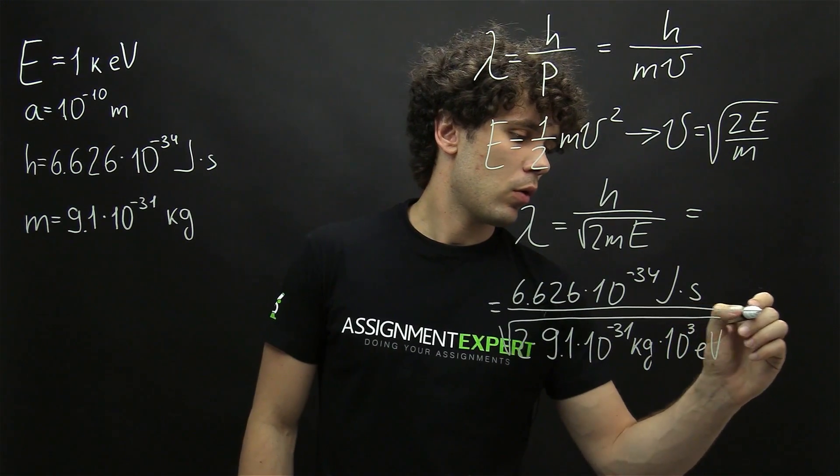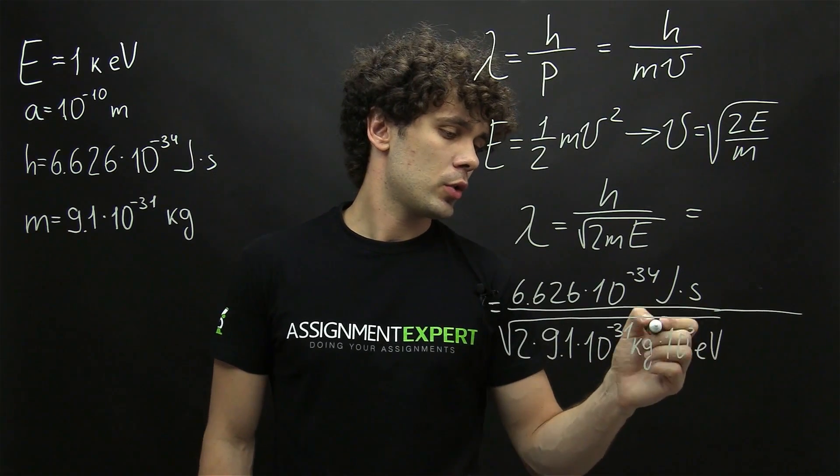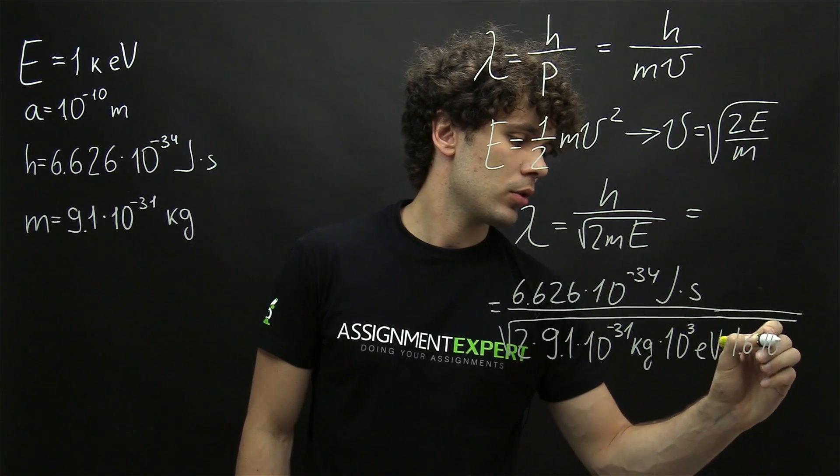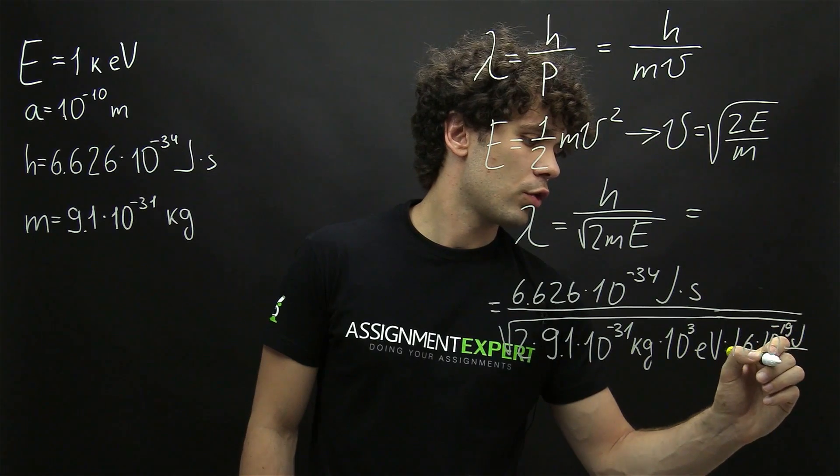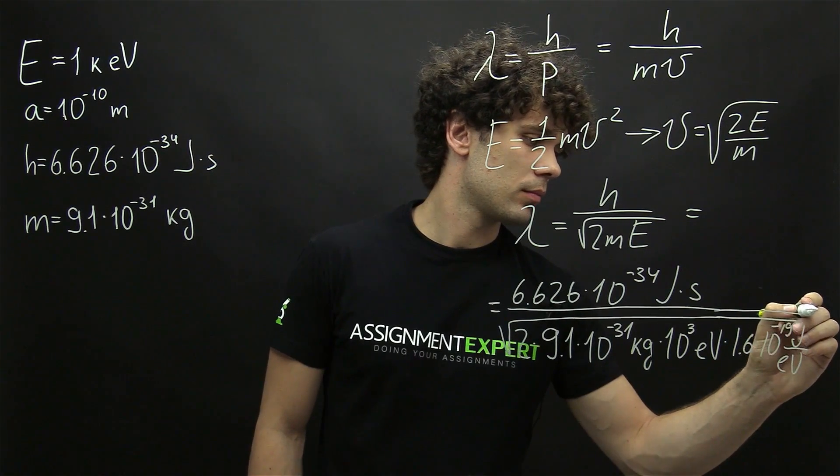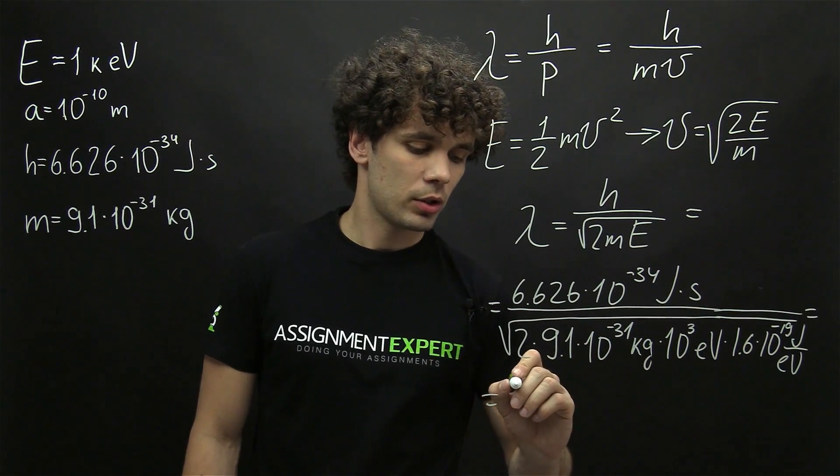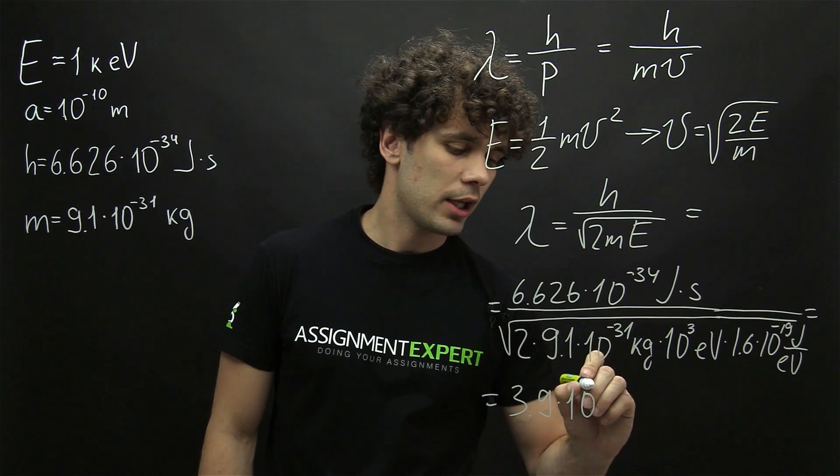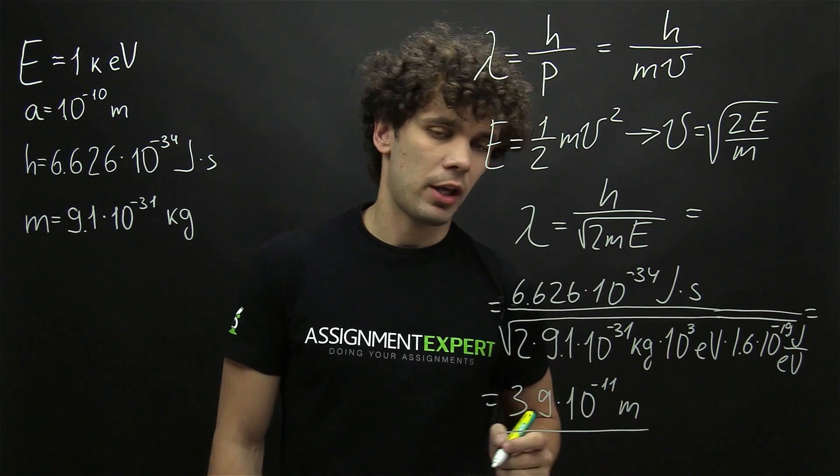And now over here we need to have our energy in joules. Therefore we need to also multiply this by 1.6 times 10 raised to the negative 19th joules over electron volts. And all this gives us approximately 3.9 times 10 raised to the negative 11th meters. So here is our wavelength.